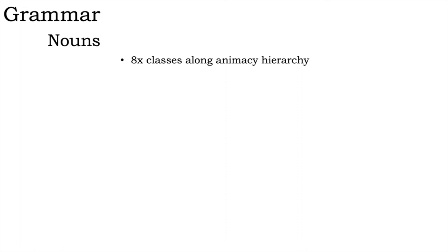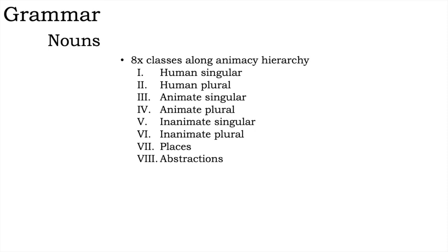Like most languages, Alpine Neptune has nouns. Nouns fall into eight classes, numbered with Roman numerals and arranged in an animacy hierarchy. You'll notice too there are plural classes — this is for things that occur in groups, or for groups of things that behave like single entities. For humans, this might be a committee; for animals, a school of fish; for inanimate, leaves on a tree.